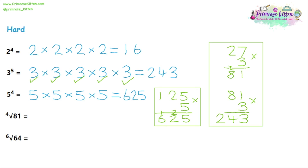Moving back to roots for question four: we have 81 and the root is to the power of four — four numbers that multiply together to make 81, working backwards. Guess two first: two times two is four, four times two is eight, eight times two is 16 — too small. Try threes: three times three is nine, nine times three is 27, and 27 times three is 81. So the answer is three.